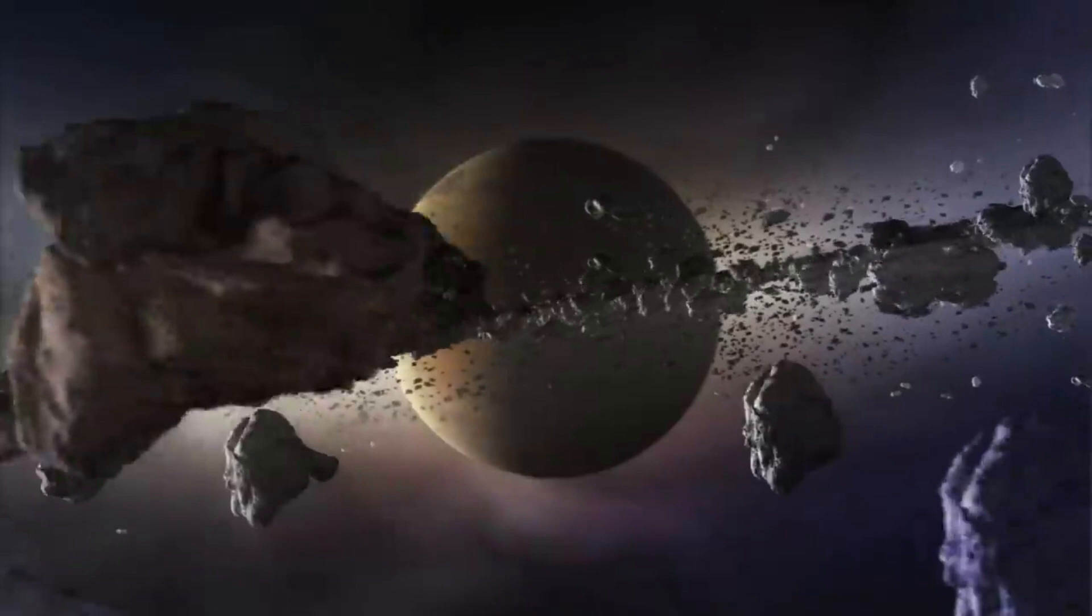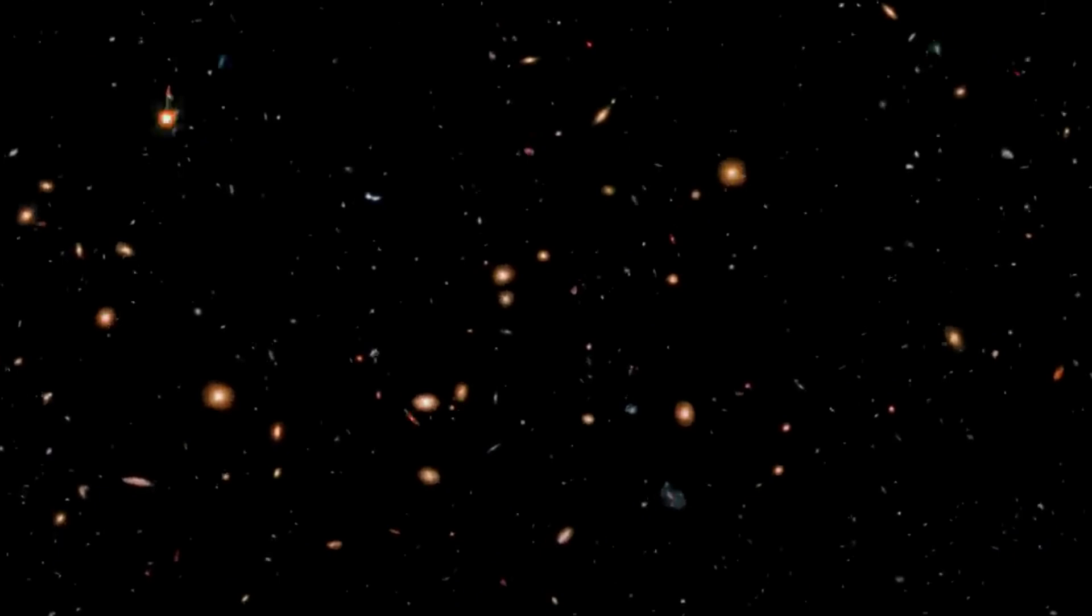NASA points out that in one specific image, they are able to see more detail than ever before of the early universe. This unique opportunity is clear when compared to an image taken of the same area by Hubble. Specifically, the massive gravity of galaxy cluster MACS0647 acts as a cosmic lens to bend and magnify light from the more distant system.